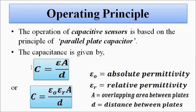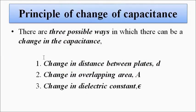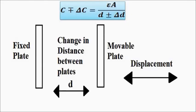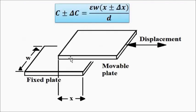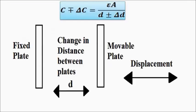The capacitance is given by the formula C = εA/d, or C = ε₀εᵣA/d, where ε₀ is the absolute permittivity, εᵣ is the relative permittivity of the medium, A is the overlapping area between the plates, and d is the distance between the plates. Three things contribute to capacitance: first, the distance between the plates; second, the overlapping area — how much of the two plates overlap each other; and third, the dielectric constant or permittivity.